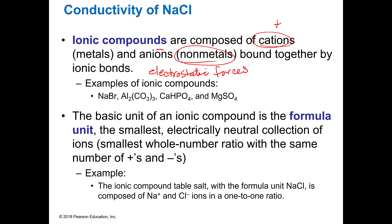So that's what's holding these ions together. You might have NaBr, Al₂(CO₃)₃, et cetera. Notice they go together in certain specific ratios. The basic unit is called the formula unit of an ionic compound — the smallest electrically neutral collection of these ions — so the whole number ratio. It has to have the same number of pluses and minuses.